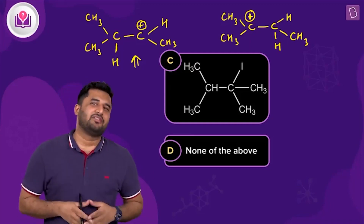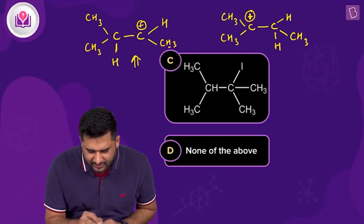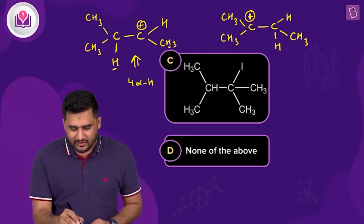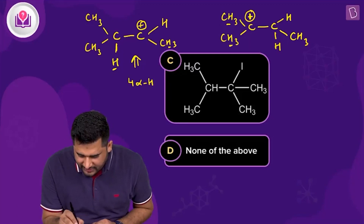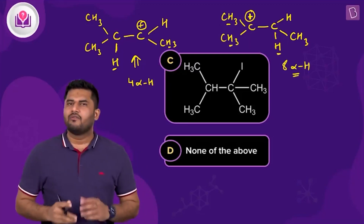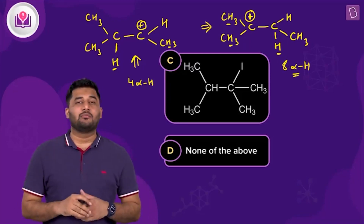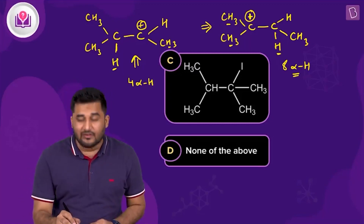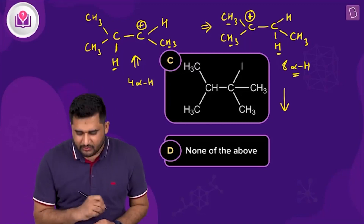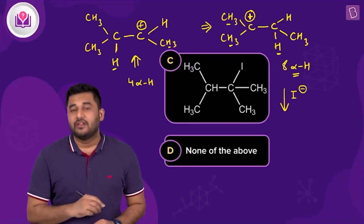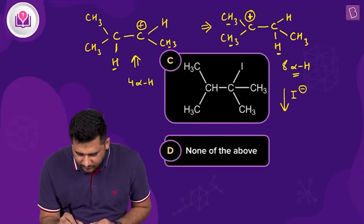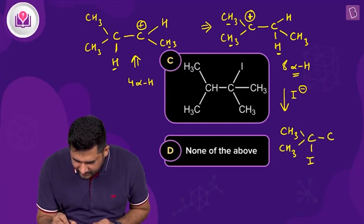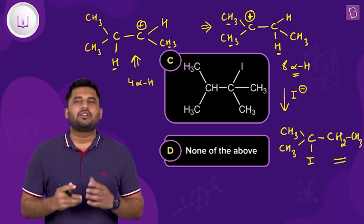Counting alpha hydrogens: in the first carbocation we have 4 alpha hydrogens, while in the second we have 7, giving 8 total. Since the second carbocation has more alpha hydrogens, it has more hyperconjugating structures and is more stable, so it leads to the major product. The I⁻ nucleophile then attacks the positively charged carbon to form the product: CH₃CH(I)CH₂CH₃ with the iodine and an ethyl group.